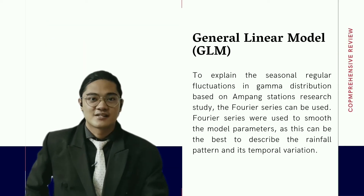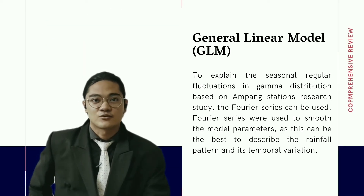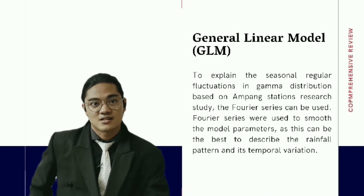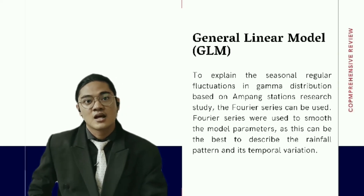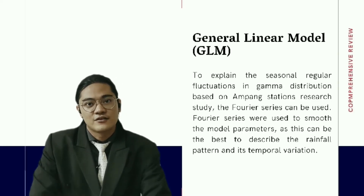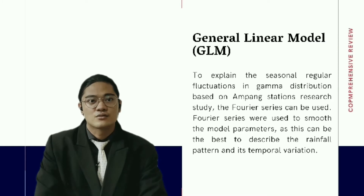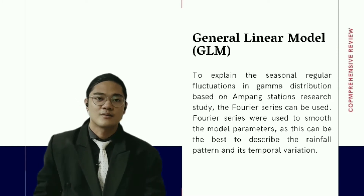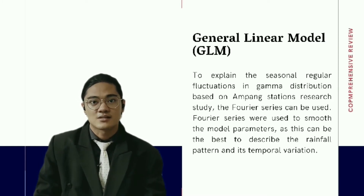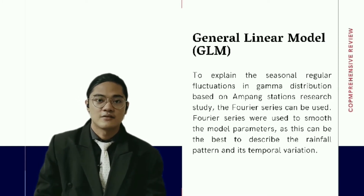To explain the seasonal regular fluctuation in gamma distribution based on the Ompang Station research study, the Fourier series can be used. Fourier series were used to smooth the model parameters. The standard deviation (SD) can be the best descriptor of rainfall patterns and their temporal variation.